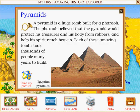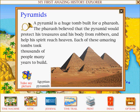Pyramids: A pyramid is a huge tomb built for a pharaoh. The pharaoh believed that the pyramid would protect his treasures and his body from robbers, and help his spirit reach heaven.